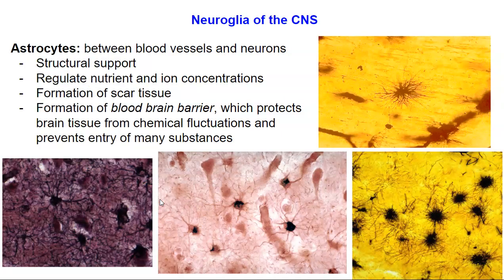The next type of glial cell in the central nervous system is the astrocyte. The astrocyte does a lot of things: it supports blood vessels and neurons by providing structural support — physically holding them in place. It also regulates nutrients and ion concentrations, forms scar tissue, and most notably, it's responsible for the formation of what's called the blood-brain barrier — a physical and chemical barrier that protects brain tissue from chemical fluctuations and prevents injury from substances.